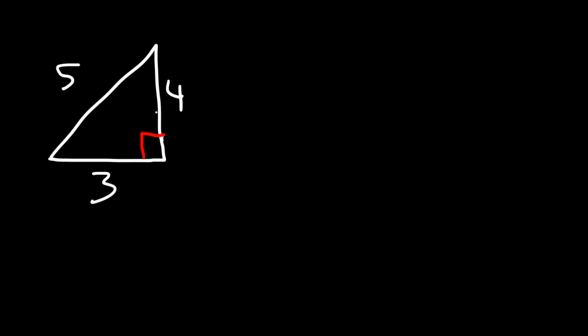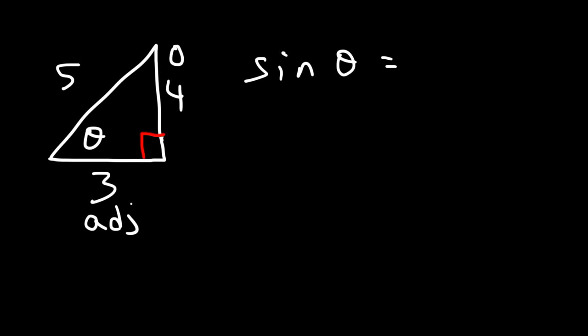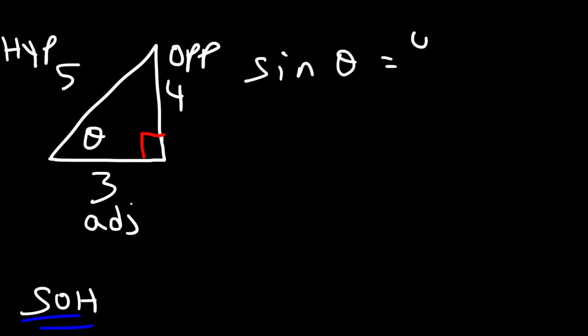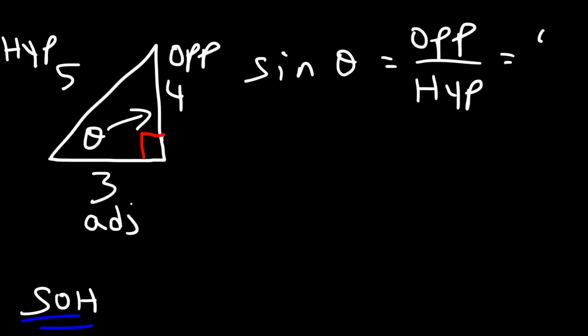Let's say we have a 3-4-5 right triangle with angle theta. What is sine theta? First, let's identify which side is opposite, adjacent, and the hypotenuse with respect to the angle. 3 is adjacent to the angle, 4 is opposite to it, and 5 is the hypotenuse. So sine theta equals the opposite over the hypotenuse — that's 4 over 5.